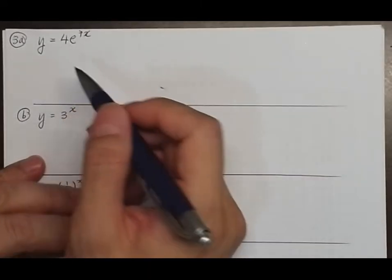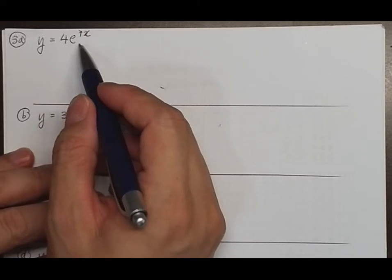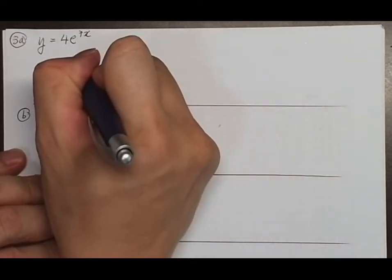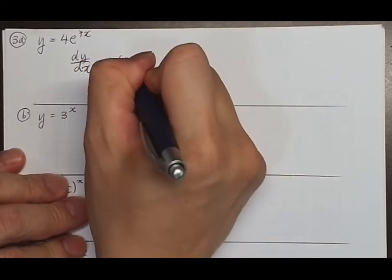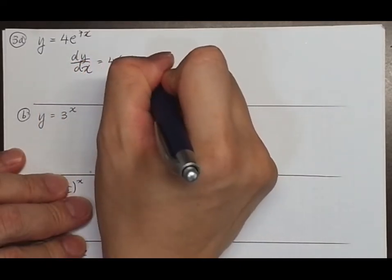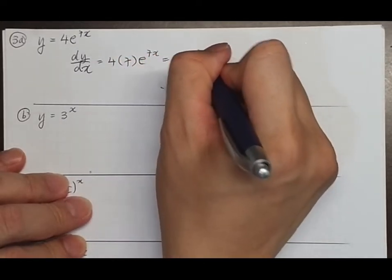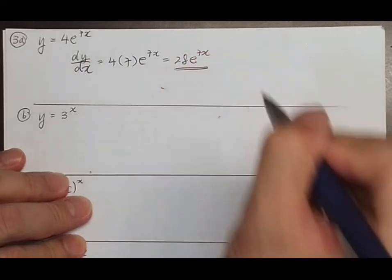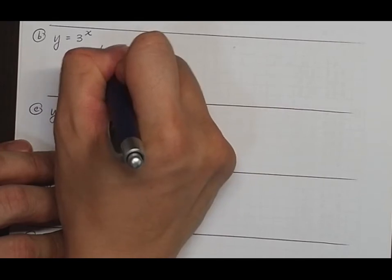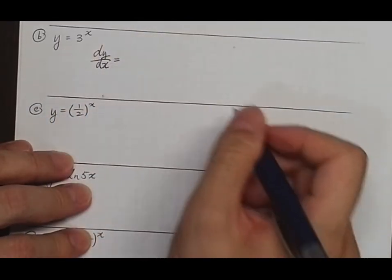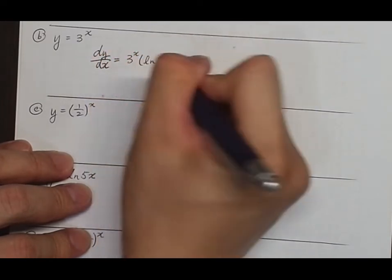Question 3a: find the derivative of y equals 4·e to the 7x. So dy/dx equals 4 times 7·e to the 7x, which equals 28·e to the 7x. Part b: y equals 3ˣ, so dy/dx equals 3ˣ · log 3.